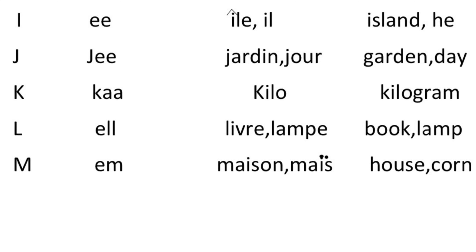Please note that on île and maïs, there is an accent. Now I am reading the French words for you from I to M: île, il, jardin, jour, kilo, livre, lampe, maison, maïs. Thank you, have a nice day.